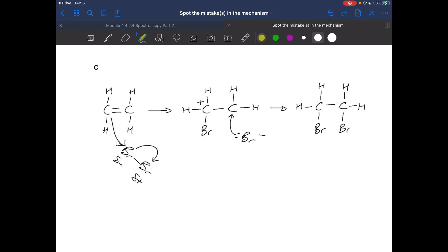Mechanism C is a bit of a disaster zone because there are actually four mistakes in this one. The first mistake is the fact that that curly arrow is starting at the carbon and not from the double bond. The next mistake is where this curly arrow starts. It should be starting from the bond and not from the bromine.